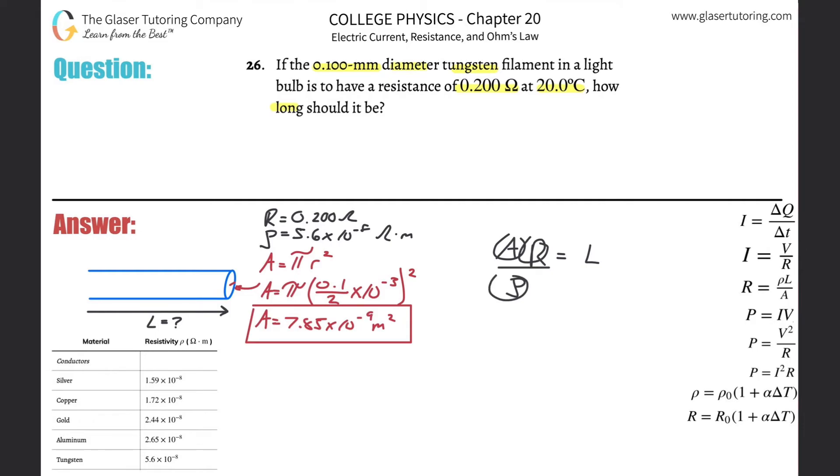Now look at how simple that is, right? Here it is: area times resistance divided by resistivity. That's it. So let's just plug it all in. So this is 7.85 times 10 to the minus 9, multiplied by the resistance which was 0.2 ohms—that's good—divided then by the resistivity, 5.6 times 10 to the minus 8, and that will equal the length.